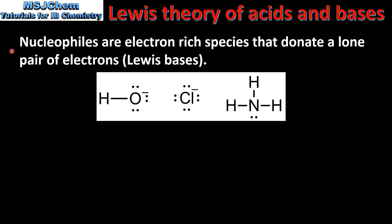And finally we look at nucleophiles and electrophiles. Nucleophiles are electron-rich species that donate a lone pair of electrons. They are Lewis bases. Here we have some examples of nucleophiles: the hydroxide ion, the chloride ion, and ammonia.